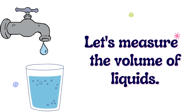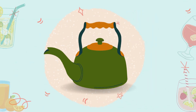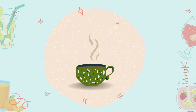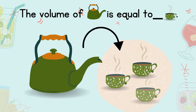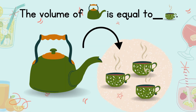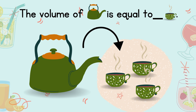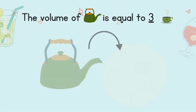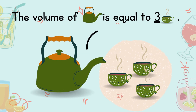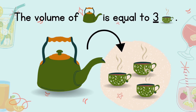Now, let's measure the volume of liquids. Look at this one. We have a kettle. Now we have a cup. Look carefully. Can you tell how many cups is equal to the volume of a kettle? The volume of a kettle is equal to 3 cups. Good job!